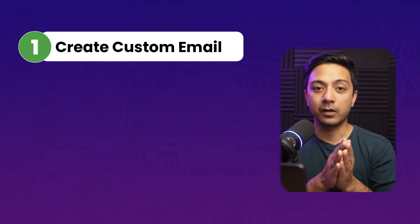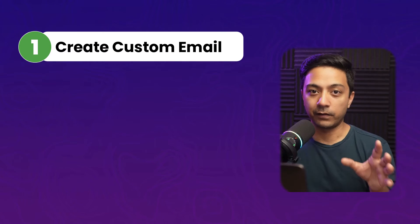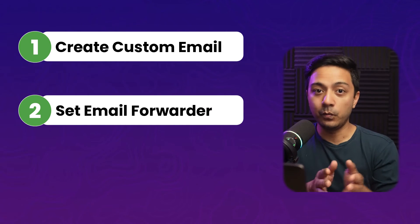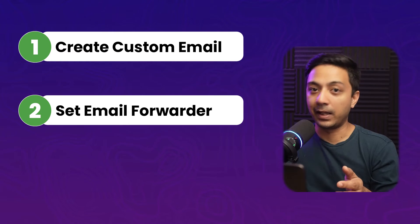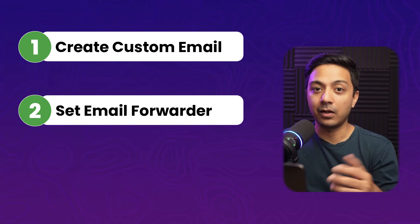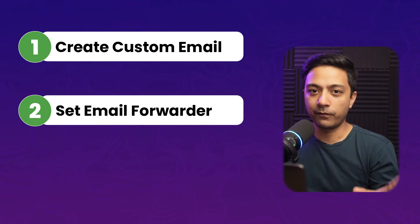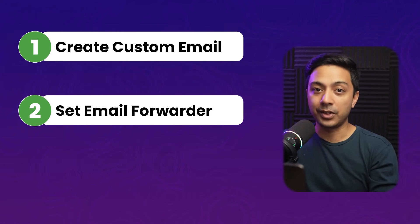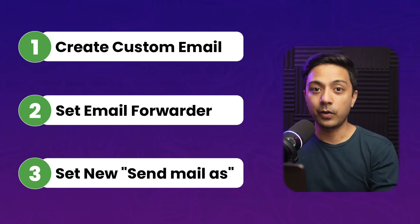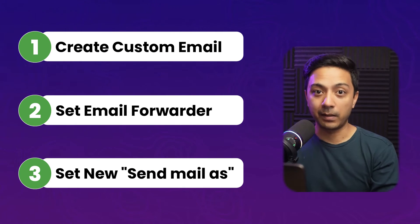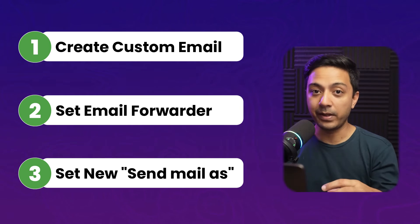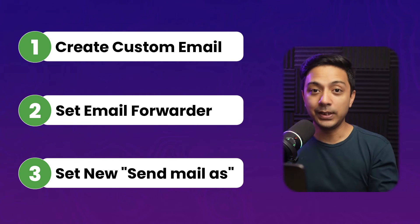Here's what we are going to do. First, we'll create a new email using the backend of our domain or hosting registrar. Then we'll set up an email forwarder so that all emails coming to this new branded address get forwarded to our generic inbox — whether that's Gmail, Yahoo, or any other service. After that, we'll add the branded email to our generic inbox so we can also reply to business emails using that branded address, all from within our generic inbox.